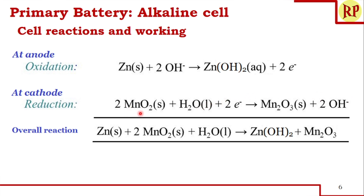Manganese is a transition metal that occurs in various oxidation states, so although we represent MnO3, it can form different types of manganese oxides — making this a complex rather than a simple reaction. In the overall reaction, the hydroxide ions formed at the cathode are consumed at the anode and the electrons cancel out, giving: Zn + MnO2 + H2O → Zn(OH)2 + MnO3.